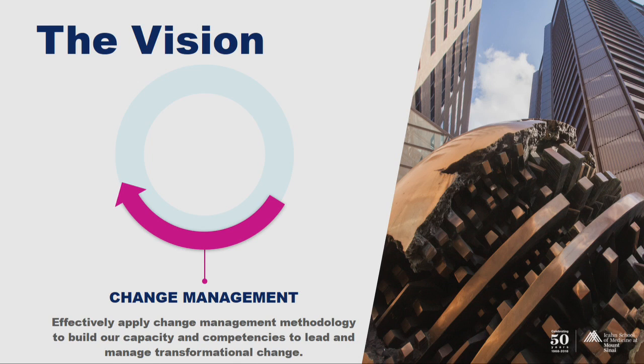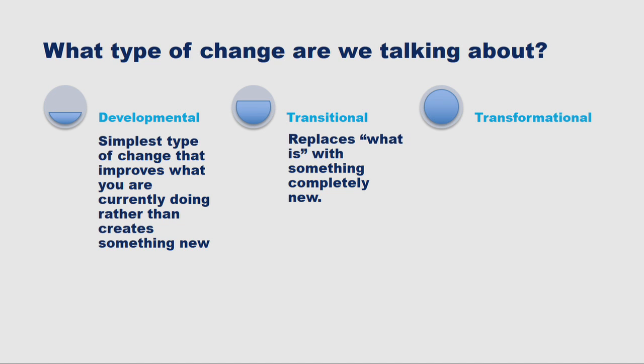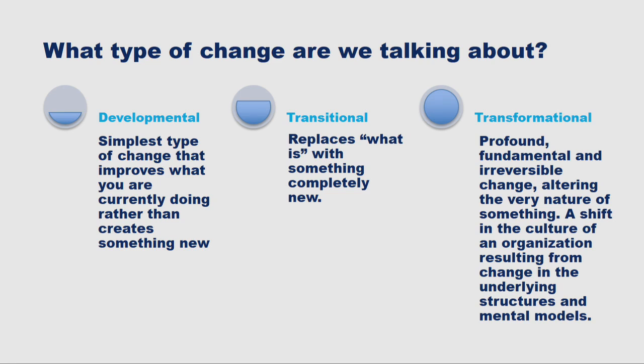All of this is rooted within a methodology called change management. When we talk about the type of change we want — getting deeper into the iceberg — we're talking about transformational change, which is very different from developmental change, which is just improving something now. We don't want to just make improvements; we want transformational change where there is a profound, fundamental, and irreversible change. Addressing racism and bias isn't a quick fix, which is why transformational change is so tricky and difficult.